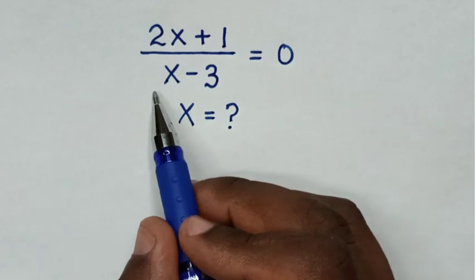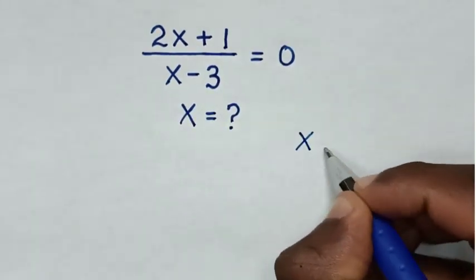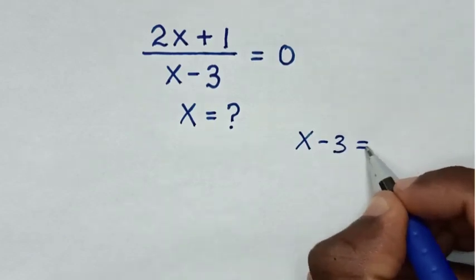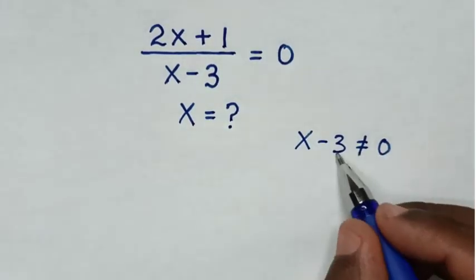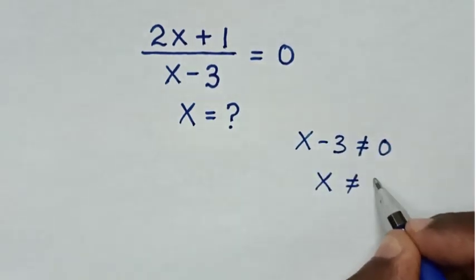So first we should note that from here in the denominator x minus 3 is not equal to 0. So when we take negative 3 to the right side, it will be x is not equal to 3.